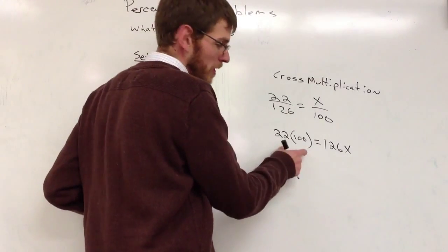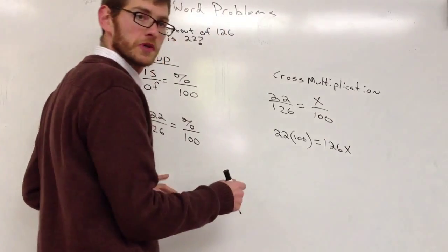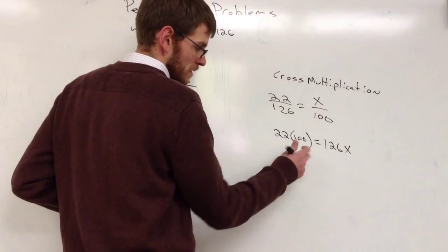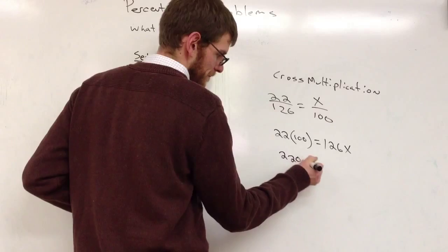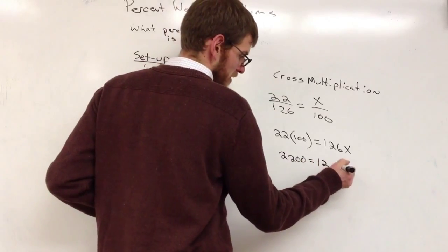What multiplication should we do on this side? 22 times 100. Which is 2200. Equals 126x.